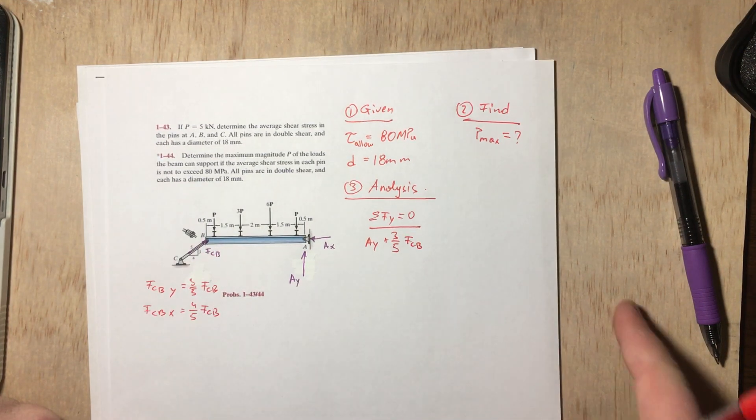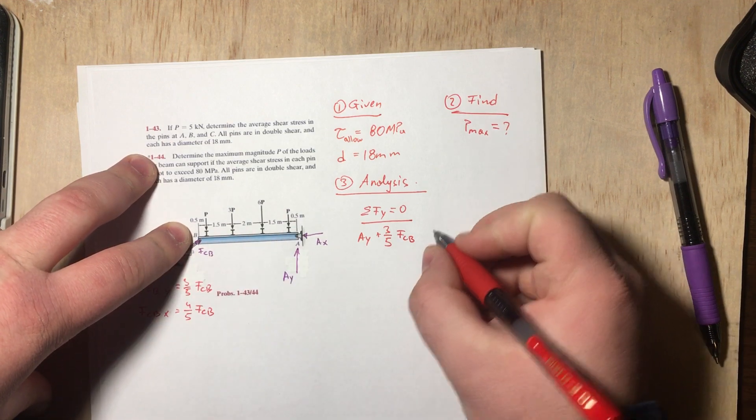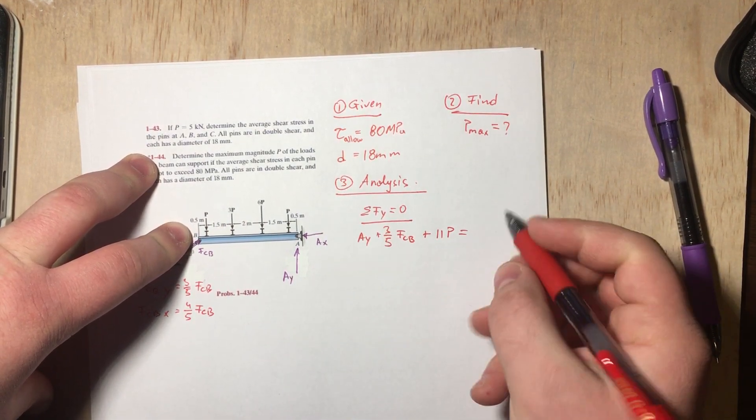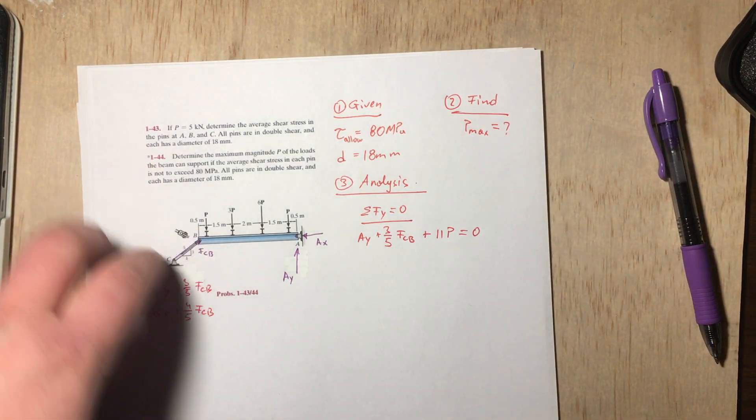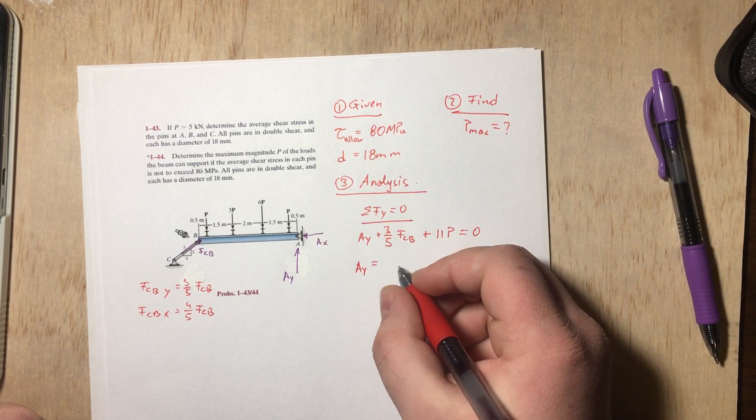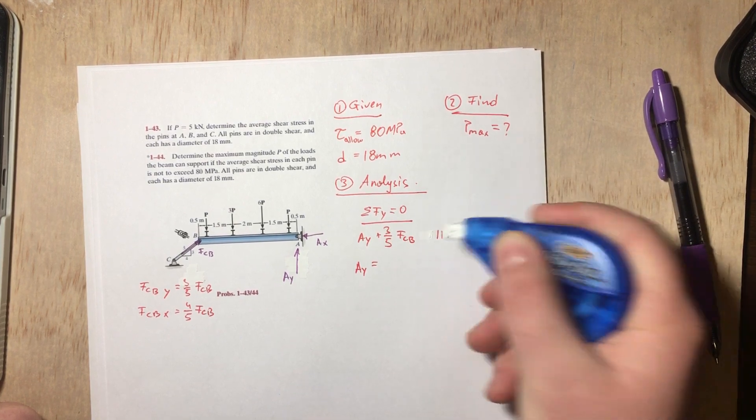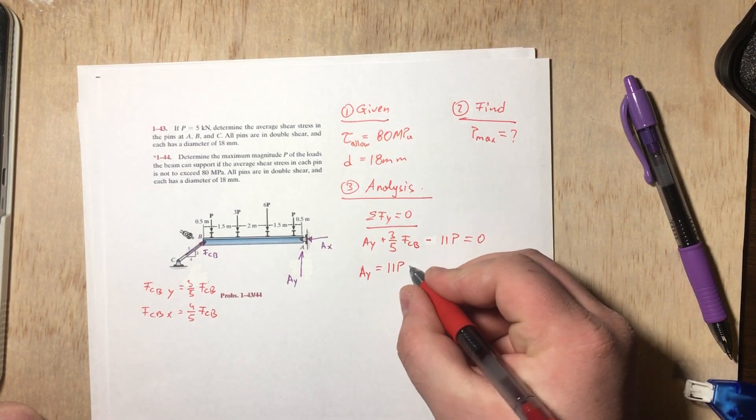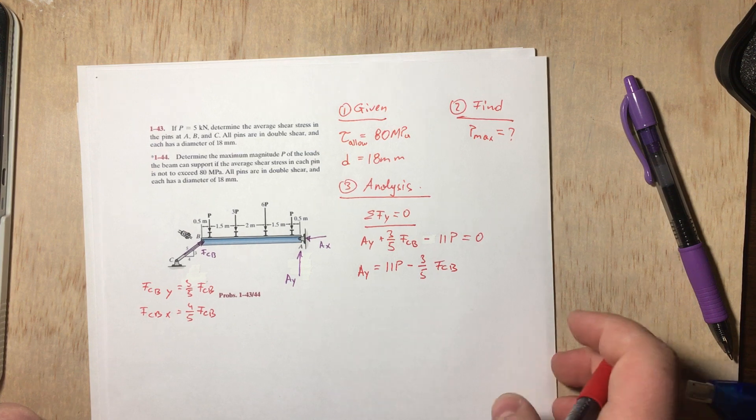Our F in the y direction is going to be 3/5 Fcb. And now we have our downward forces which are our P forces. We have four different ones and we can just add them up. So we have 1, 4, 10, 11P, and that has to equal 0. Remember we're after the reaction forces, so let's solve for Ay. Ay is going to be negative because our P forces are going downward. Therefore we have 11P minus 3/5 Fcb.